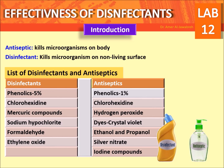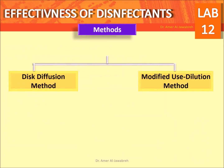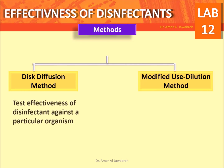Additional disinfectants include formaldehyde and ethylene oxide. Antiseptics include phenolics, 1% chlorhexidine, hydrogen peroxide, dyes such as crystal violet, ethanol and propanol, silver nitrate, and iodine compounds. Two methods are used: the disk diffusion method and the modified use dilution method.